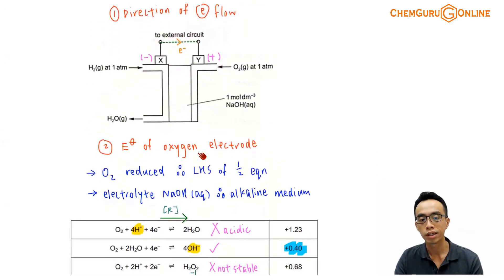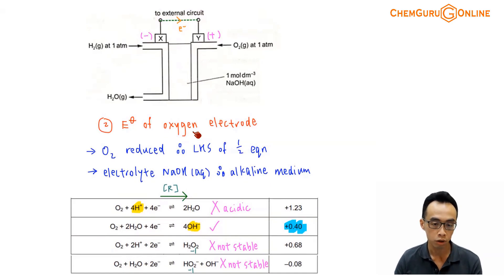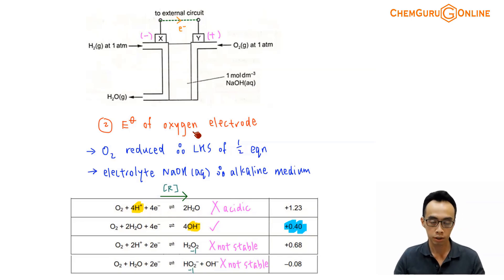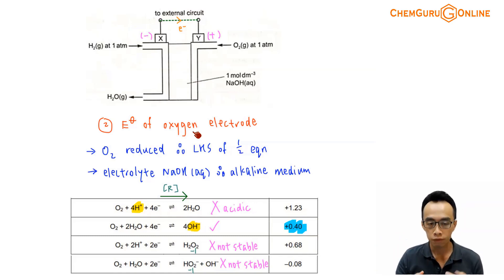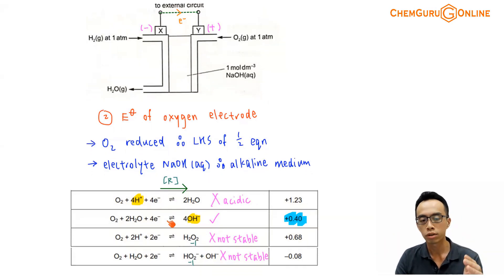Now we need to consider the E° value for O2 — is it 0.40V or 1.23V? Since O2 undergoes reduction, when we find the half equation involving O2 in the data booklet, O2 should appear on the left-hand side. In the data booklet, all half equations are written in reduction form — the forward direction is reduction. There are four half equations involving O2 on the left-hand side, and I have listed all of them.